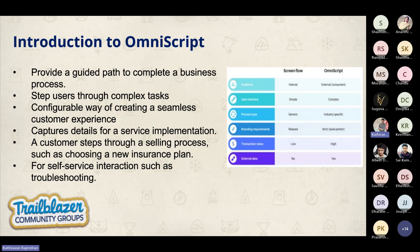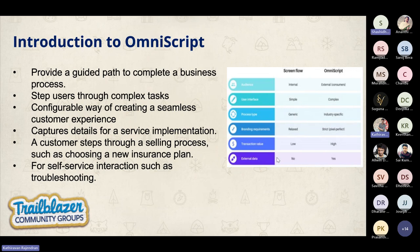The first topic is introduction to OmniScript. Many of us already know what OmniScript is, since we're concentrating on velocity process libraries such as public sector, health, insurance, financial services, media and entertainment, and communications. For those not familiar, it's easy to compare OmniScript with Lightning Flow — specifically a screen flow — where the same set of screens and drag-and-drop inputs are similar. OmniScript allows you to build a guided path for completing a business process and serves as a configurable way of creating a seamless customer experience.